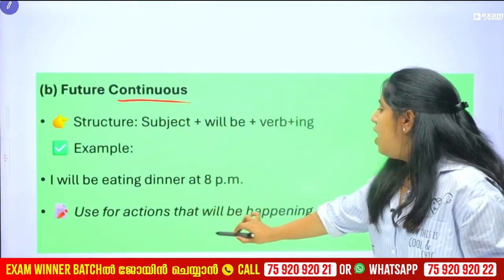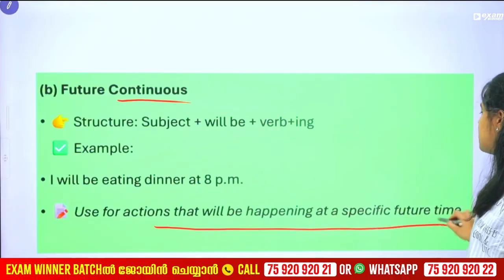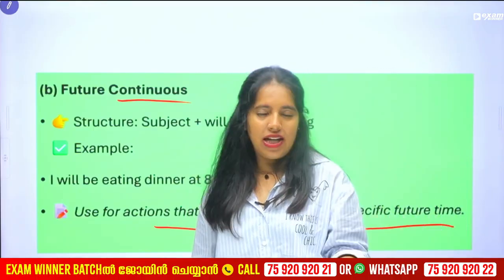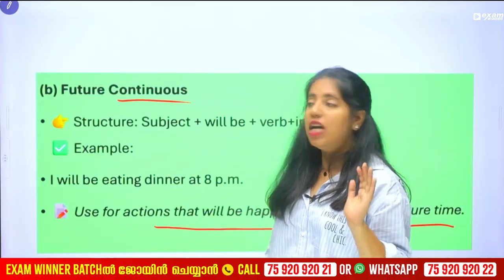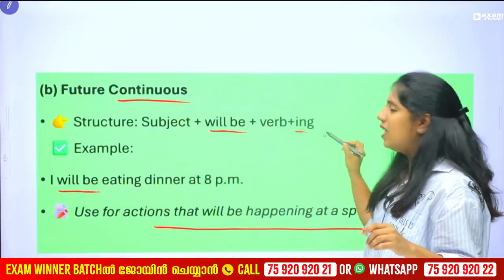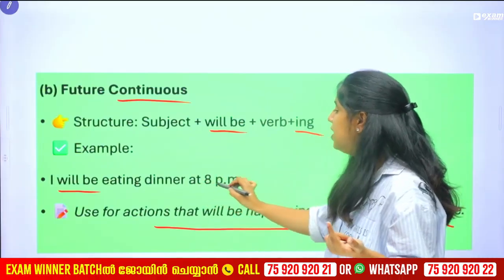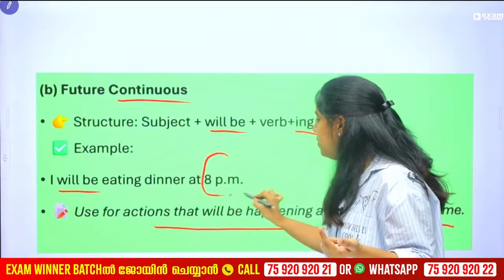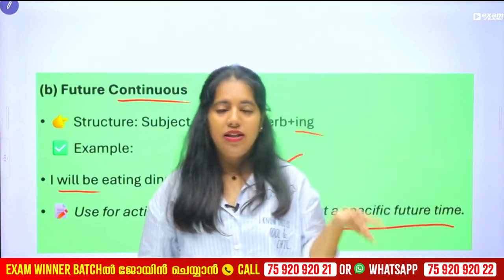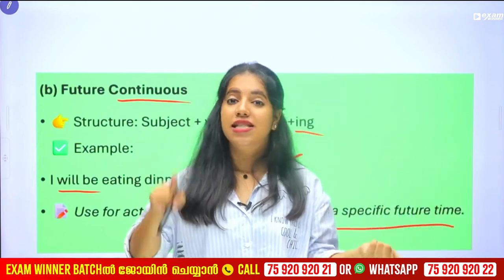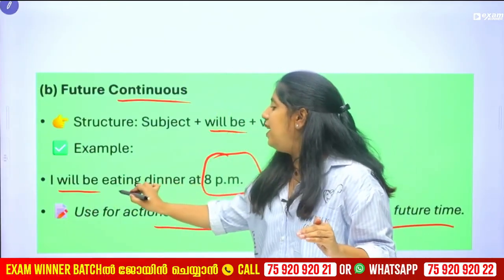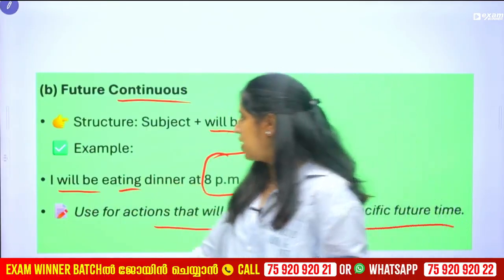Future continuous — an action that will be happening at a specific point in the future. The structure is 'will be' plus '-ing' form. For example, I will be eating dinner at 8 pm. You will be eating dinner at 8 pm.